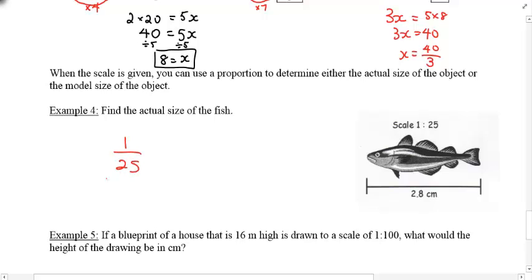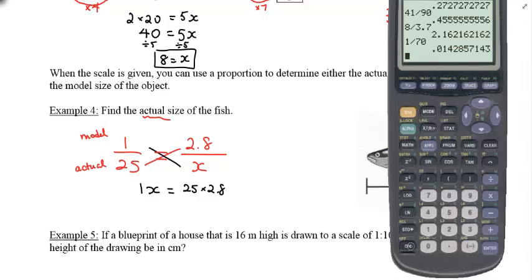Notice the scale given to you this time is a ratio, but we can write that as a fraction 1 over 25. The 1 represents the model, and then the 25 represents the actual or the real life. Okay? So that 2.8 that we have there, is that the model number or the actual number? Well, this is a picture, right? It's a diagram. So this must represent the model. And because we're actually asking for the actual size, that's our variable or our box, and I'm going to put the x on the bottom.